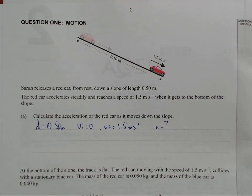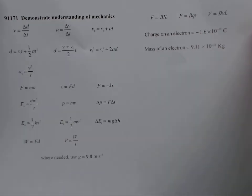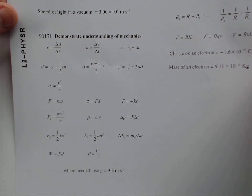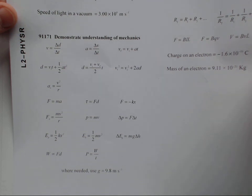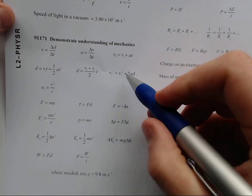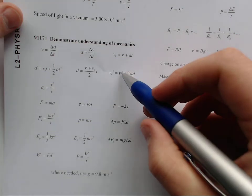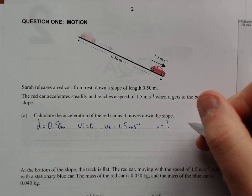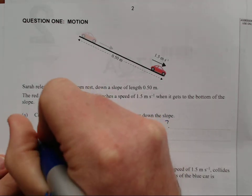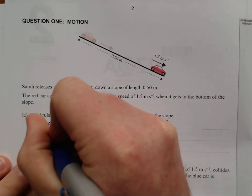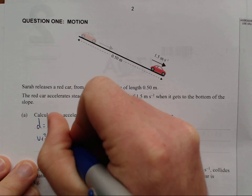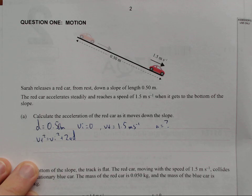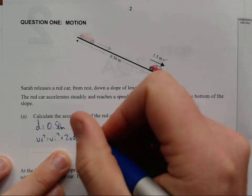So if we use our formula sheet, we have the initial velocity, we have the distance, we have the final velocity and we're trying to work out the acceleration. I'll probably pick this formula here. So we'll check that in. So VF squared equals VI squared minus 2AD.